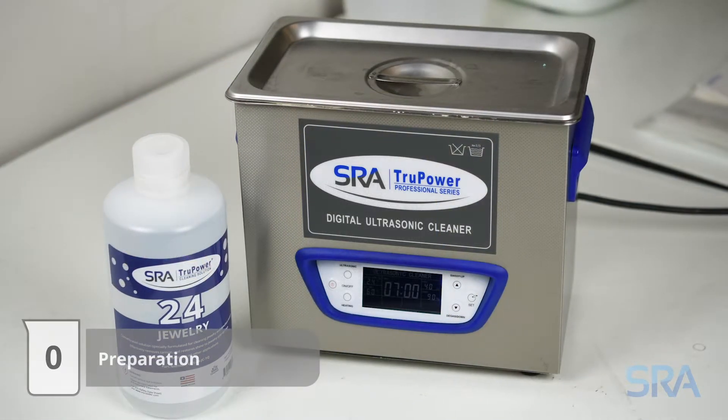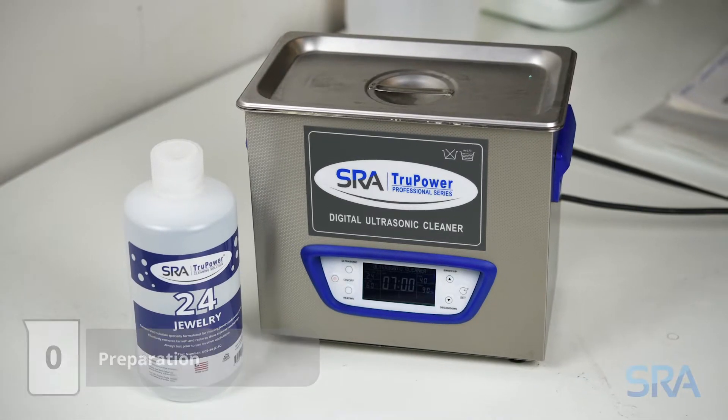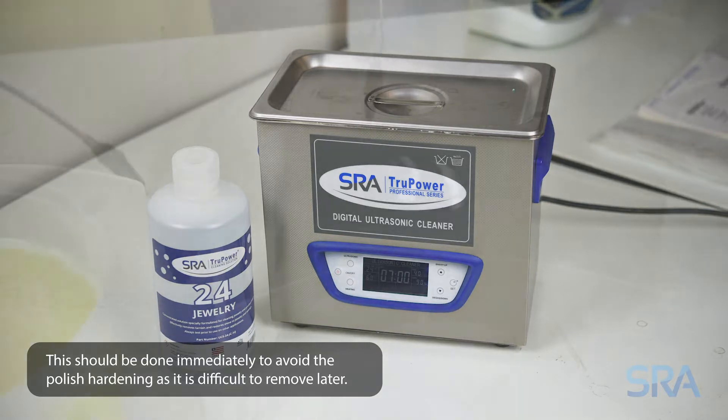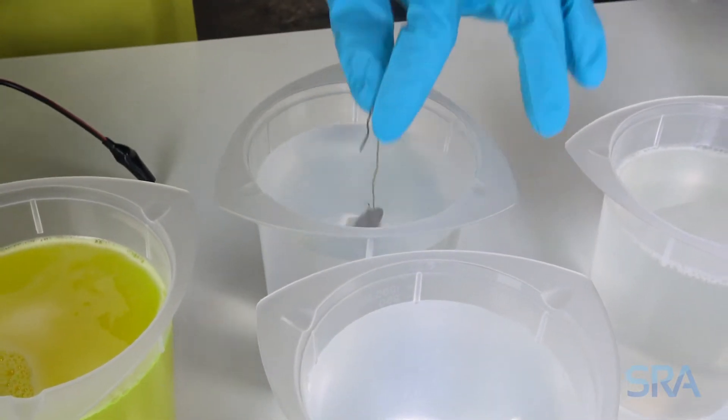For repair items or badly oxidized pieces, you'll want to start with polishing and then cleaning in an ultrasonic cleaner. Once clean, rinse in distilled water.